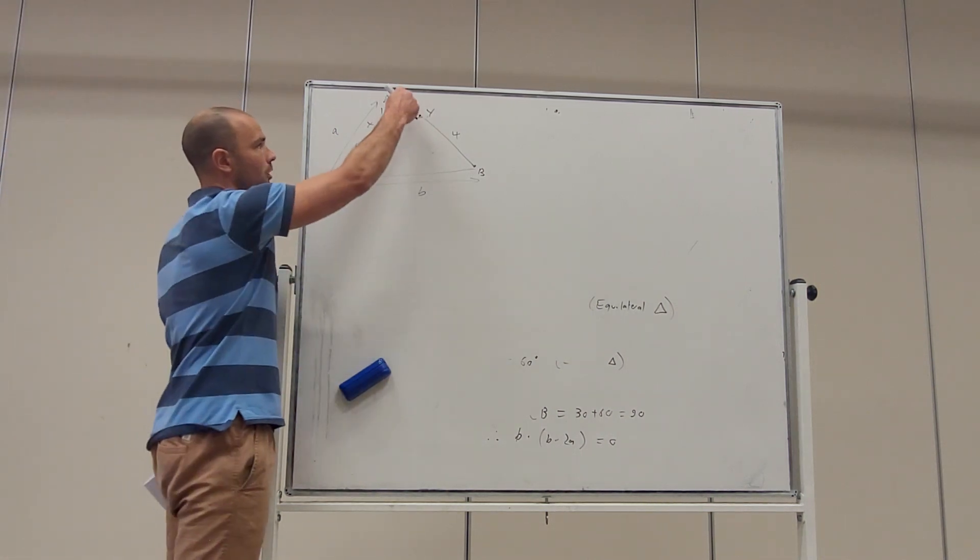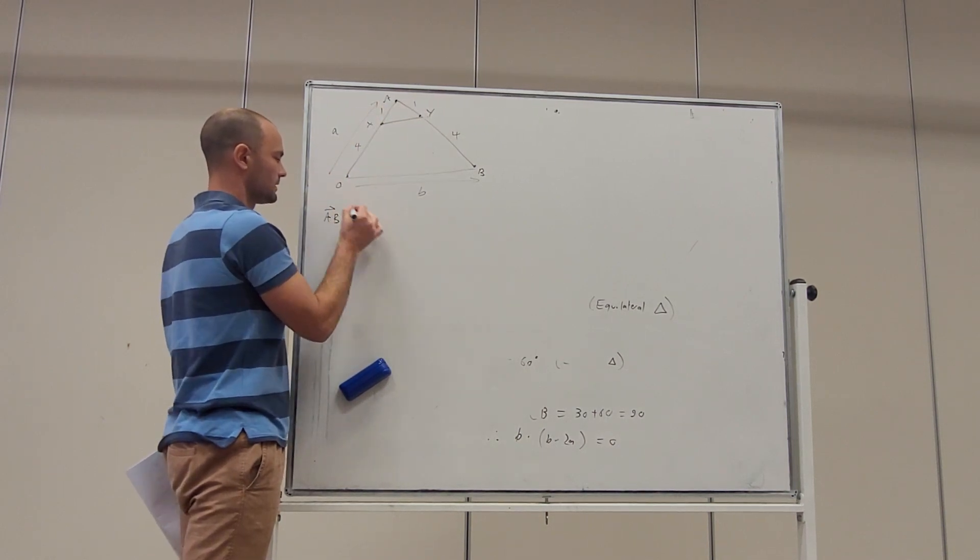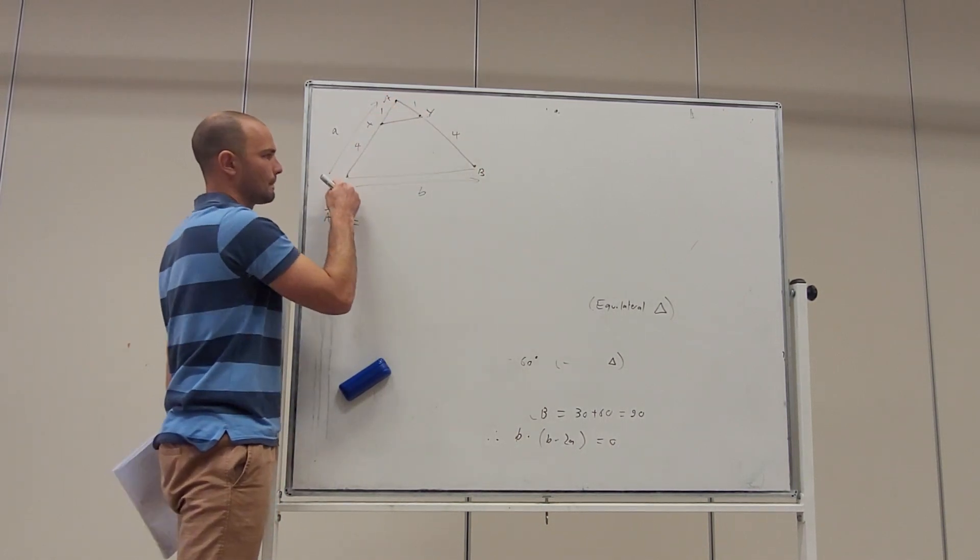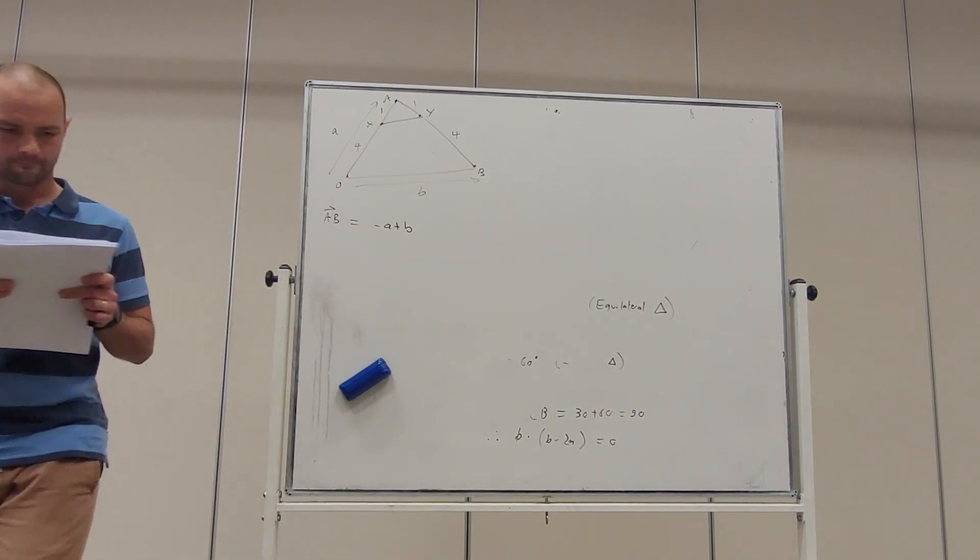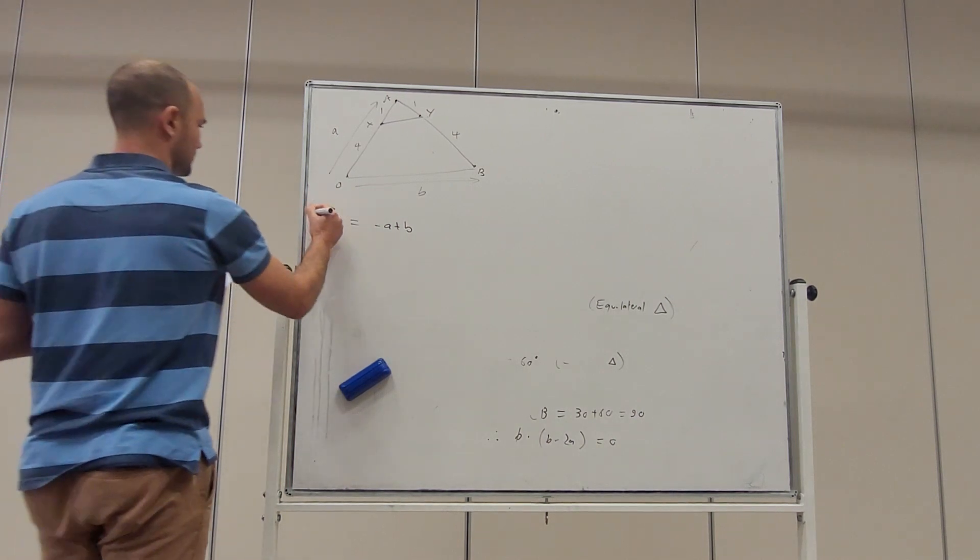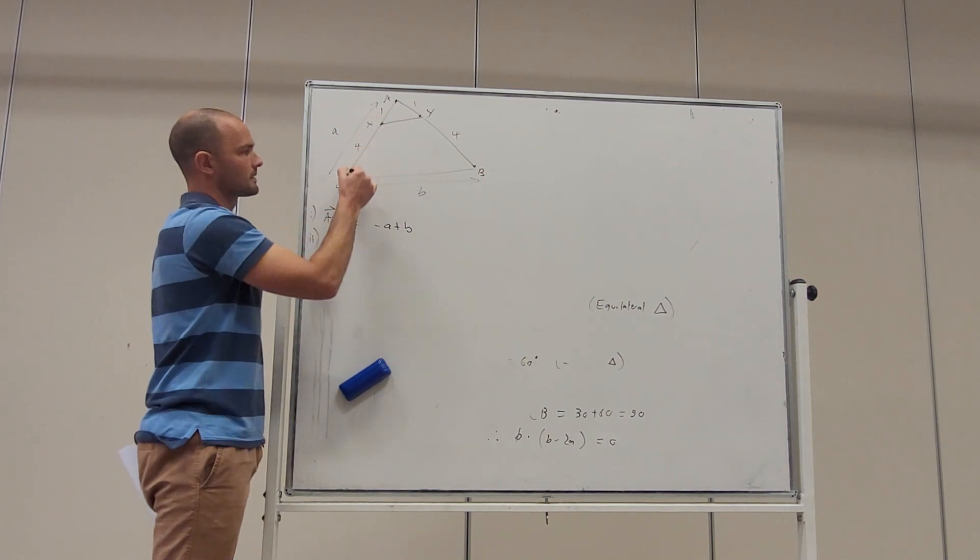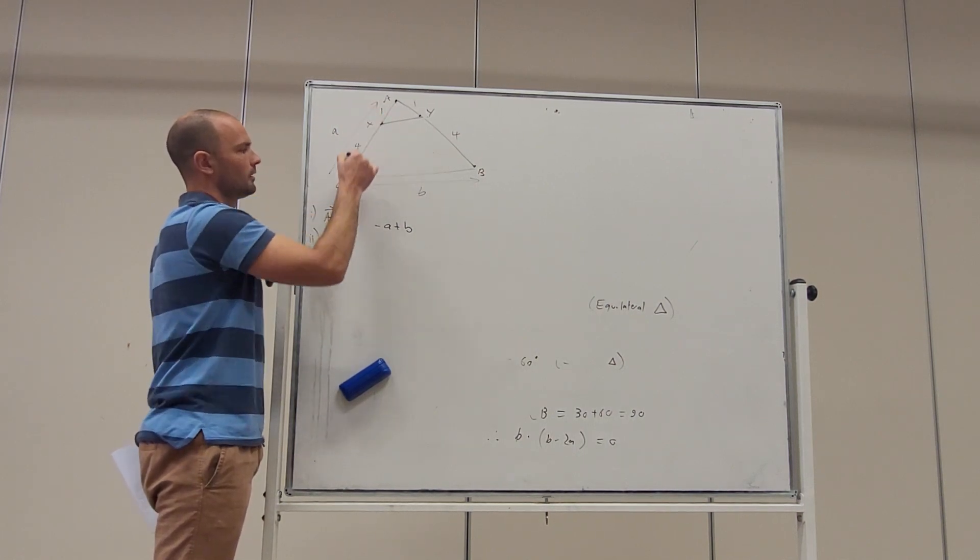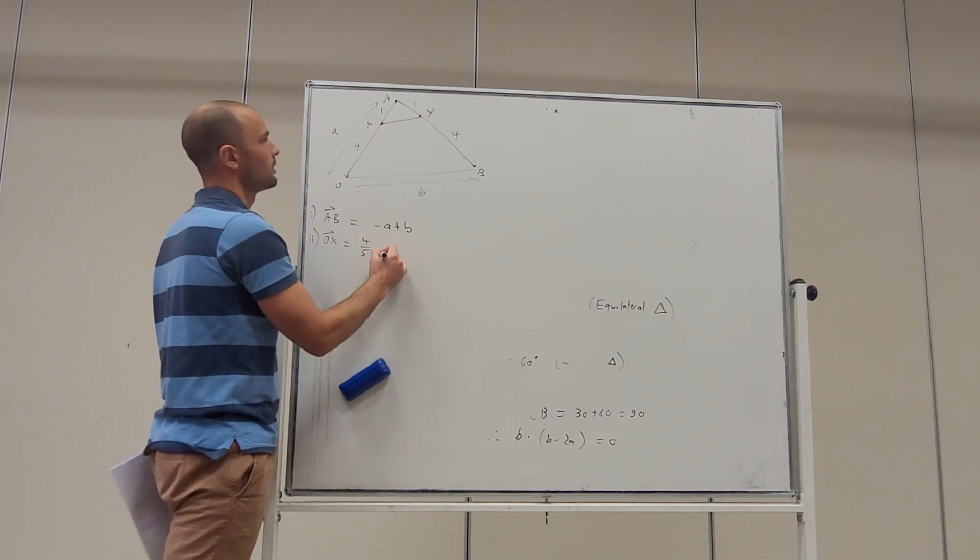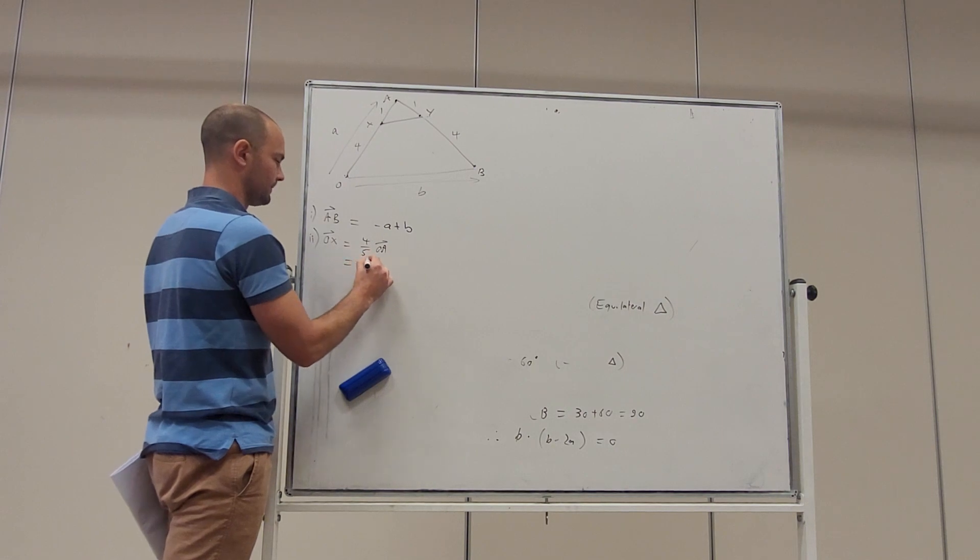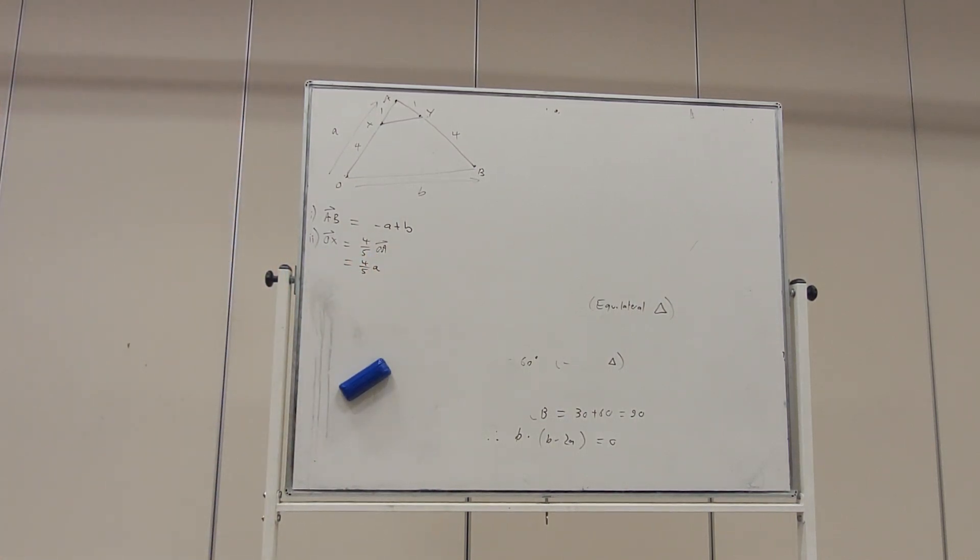All right. In terms of A and B, find the vector from A to B. Okay. So, from A to B, we're going to have minus A plus B. Okay. From O to X. Okay. From O to X, that's 4 fifths of the way from O to A. So, let's write that. Vector OX is 4 fifths of vector OA, which is 4 fifths of A.